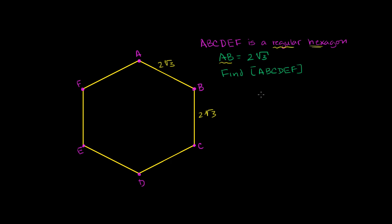With a hexagon, we can take a point right here — let's call it point G — and say it's the center of the hexagon. It can't be equidistant from everything, because this isn't a circle, but it is equidistant from all the vertices. So GD equals GC equals GB equals GA equals GF equals GE.